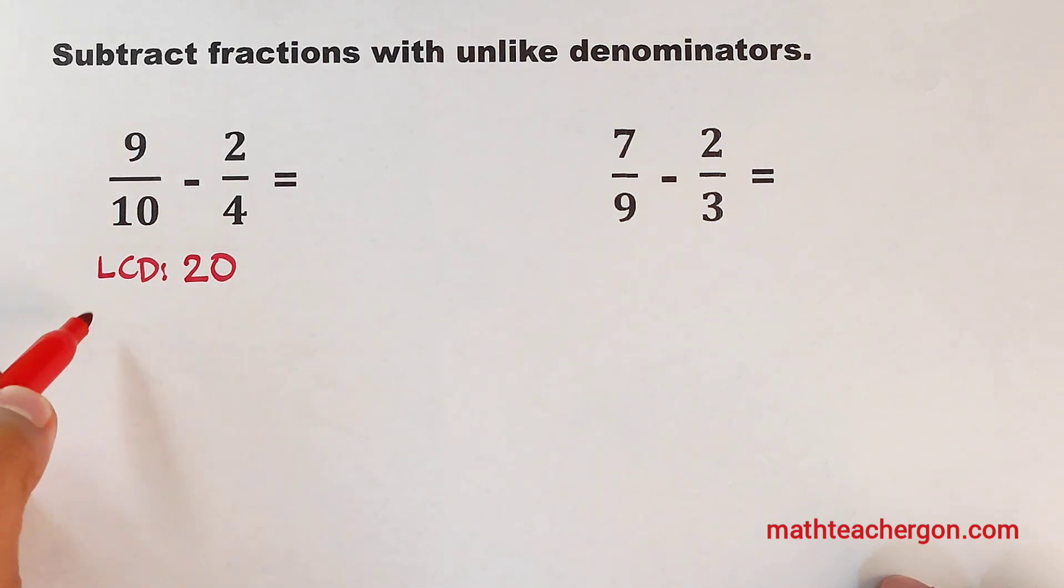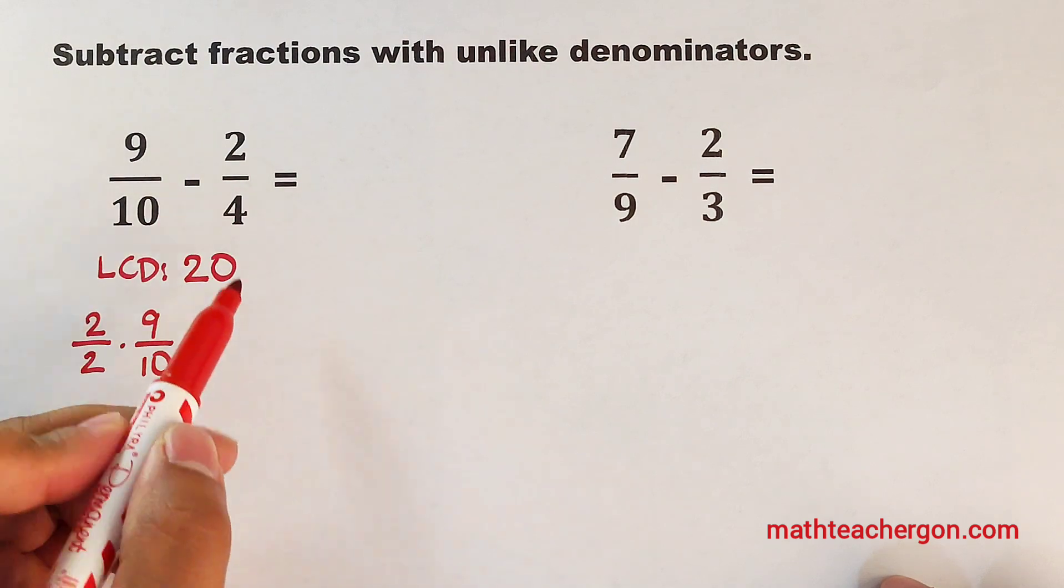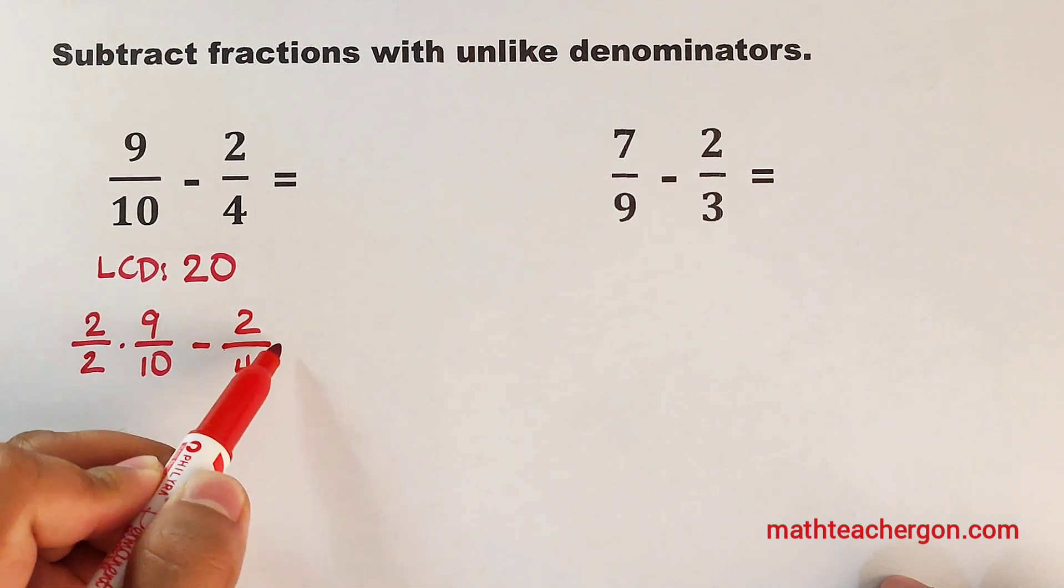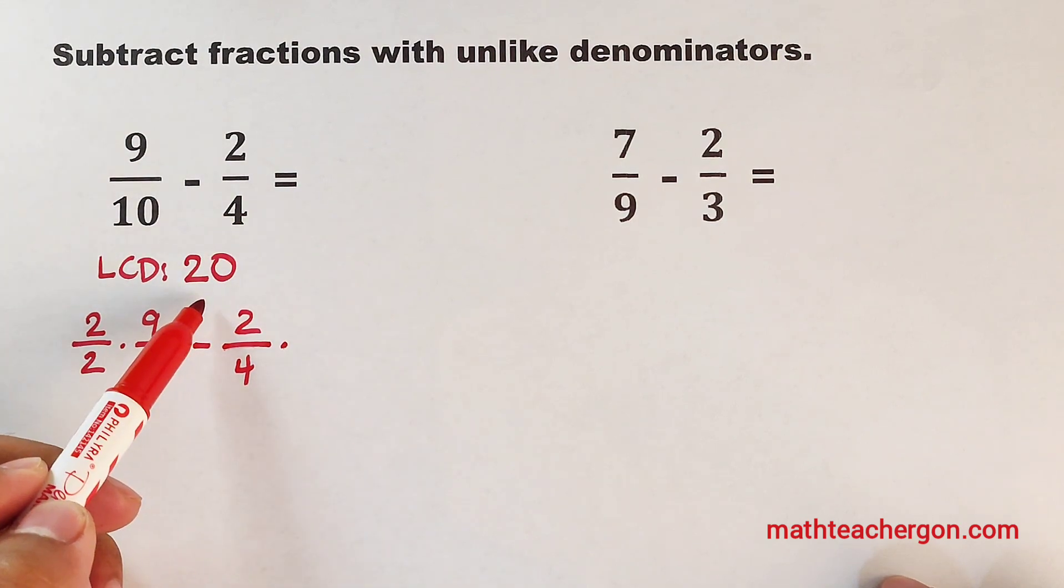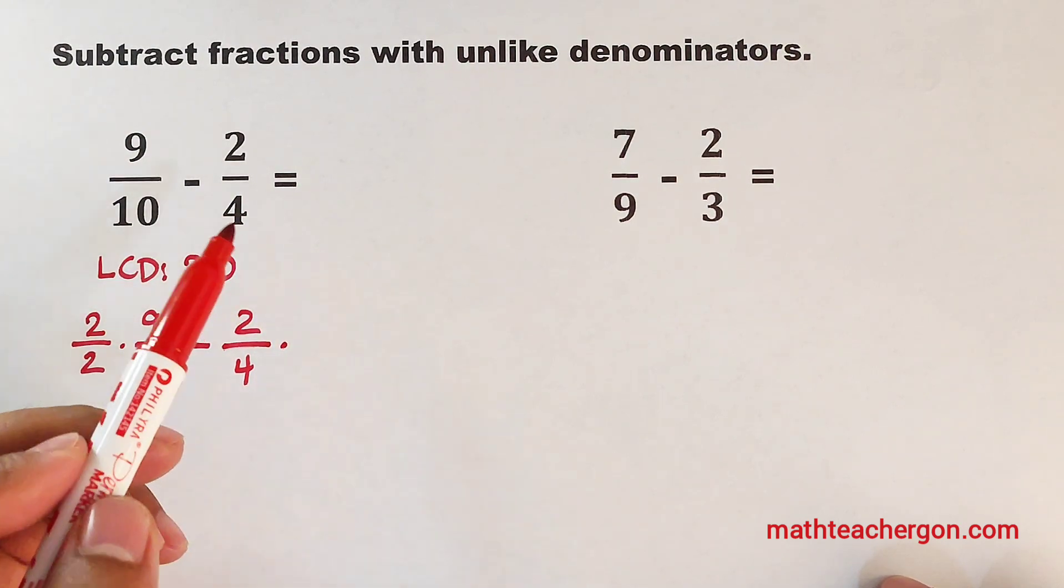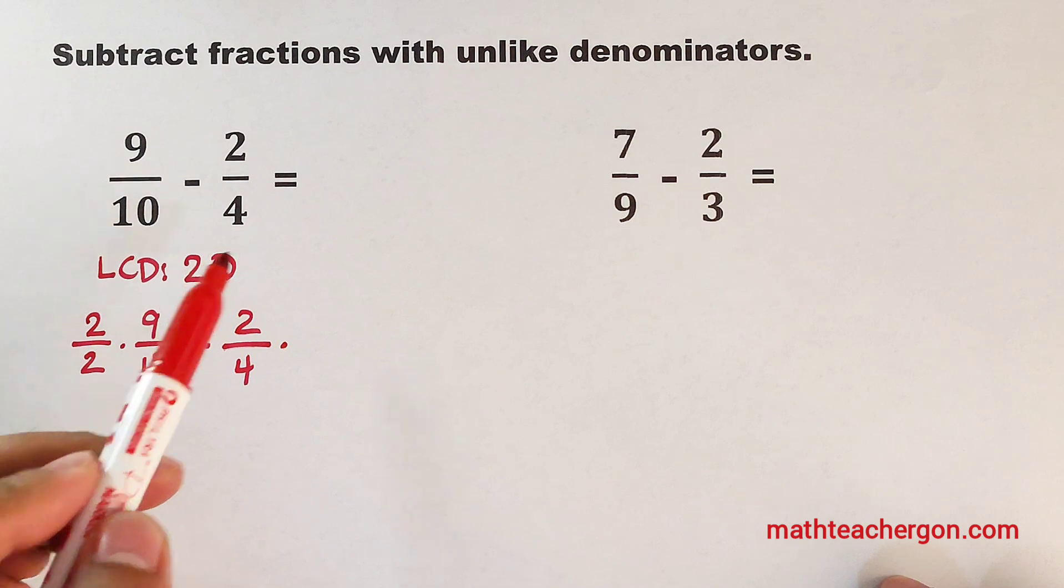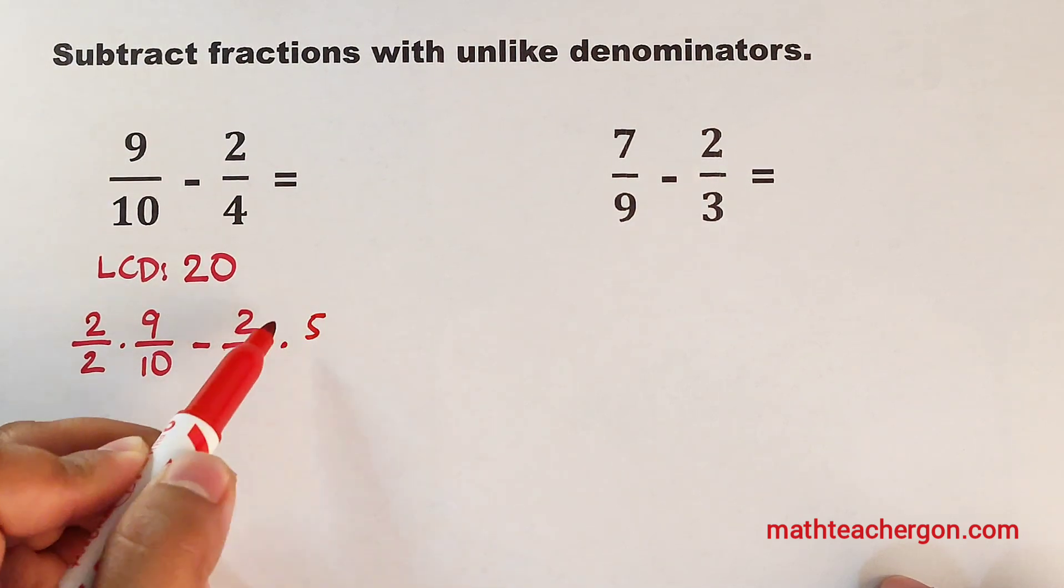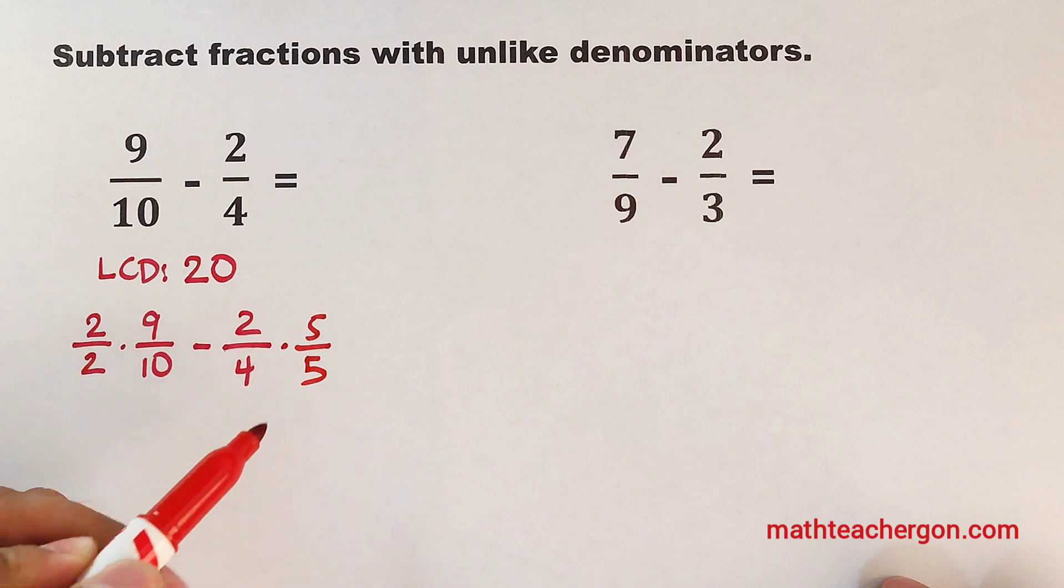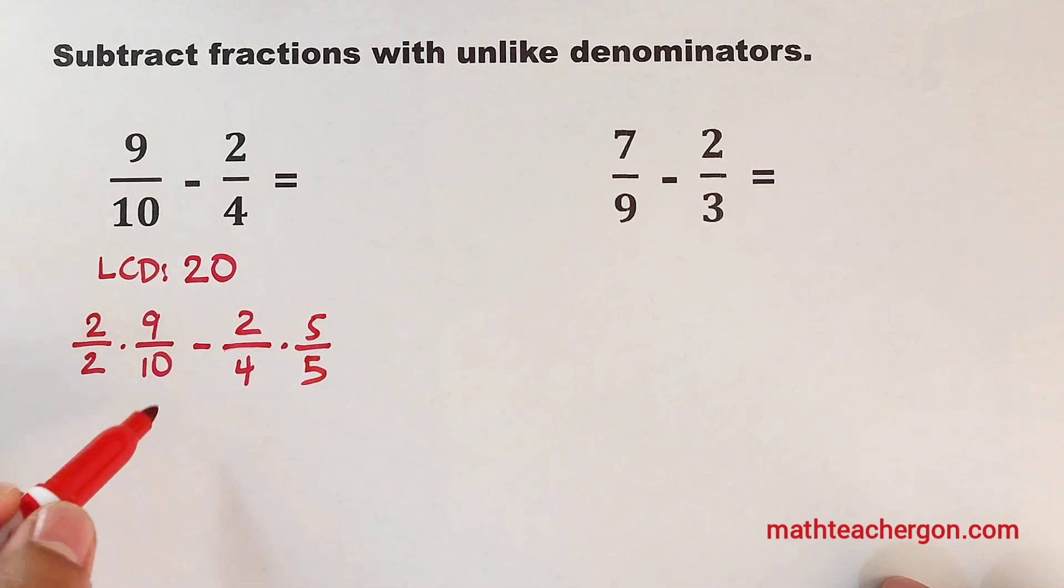This fraction must be multiplied by 2 over 2. Okay? So we have 9 over 10. Then minus your 2 fourths. To make 4 be equal to 20, we need to multiply 4 by 5. So 2 fourths, or 2 over 4, must be multiplied by 5 over 5.